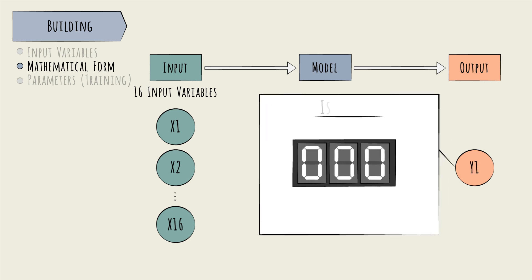In practice, this would likely be the probability that the image is a t from 0 to 100%. We could interpret anything above a threshold, say 75%, as meaning yes, it's a t.